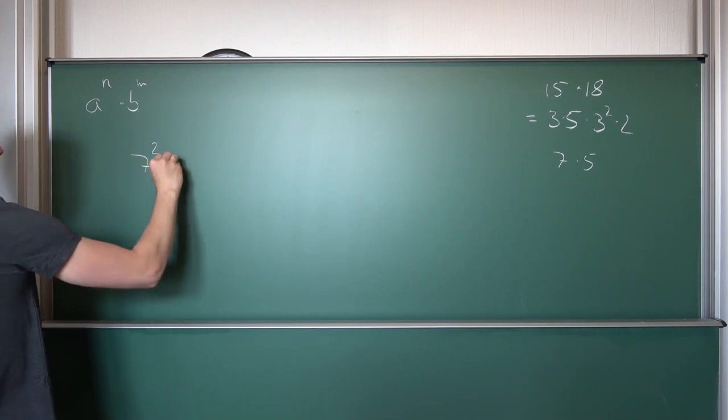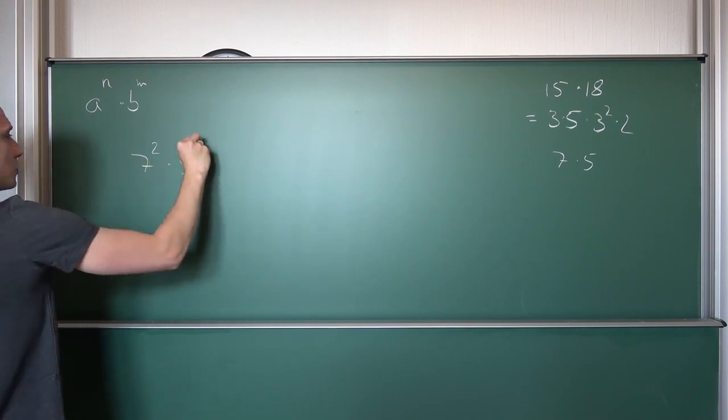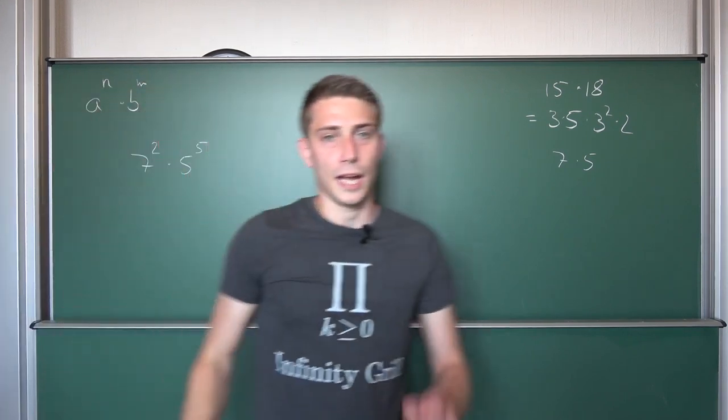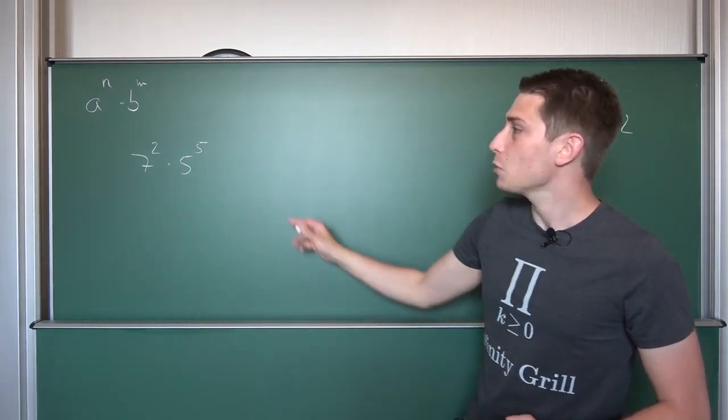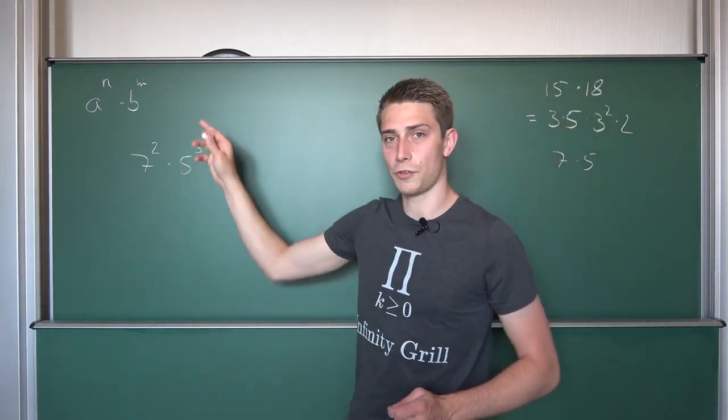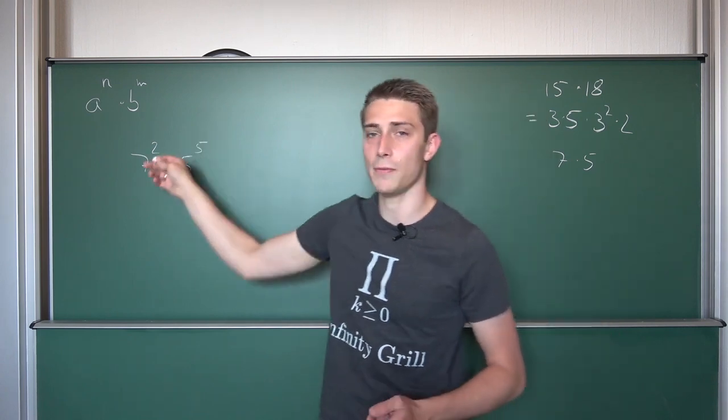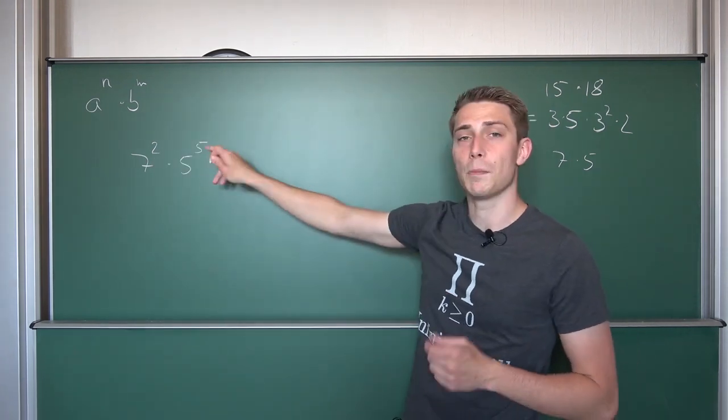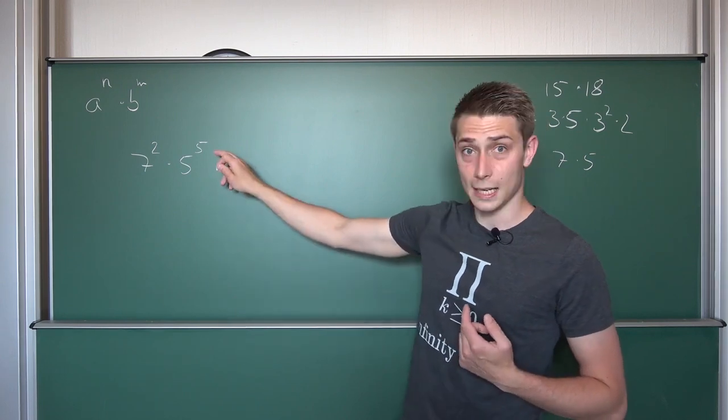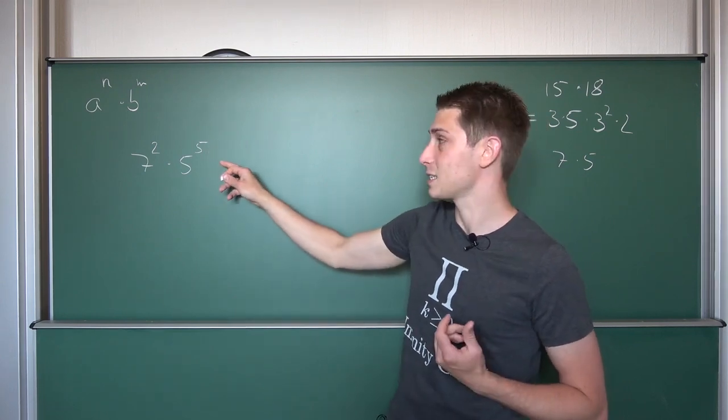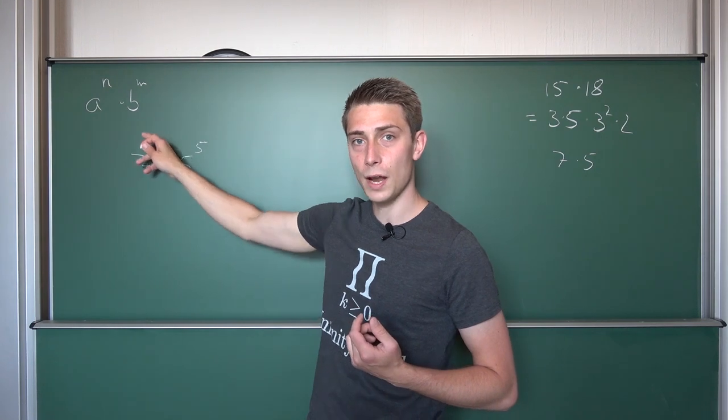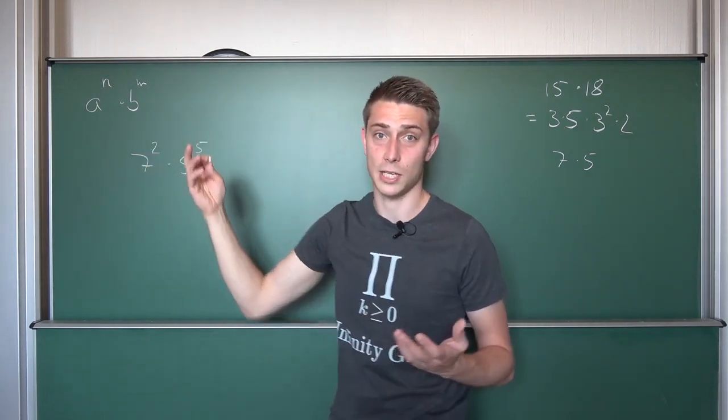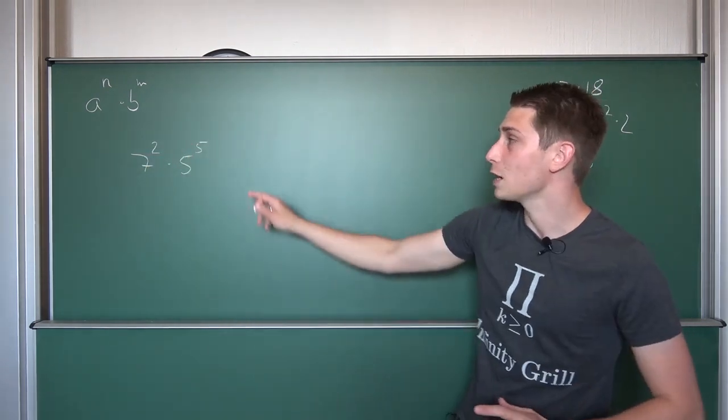For example, 7 squared times 5 to the fifth power. And the first case is when we can't express one of the exponents as a multiple of the other one. But what we can always do is, if we take a look at the bigger exponent, we can write it as a sum of one other exponent plus another exponent. Meaning, we are just going to dive right in.